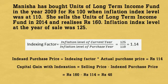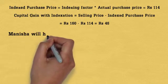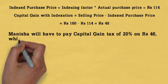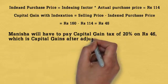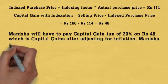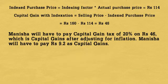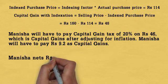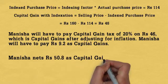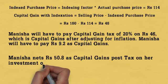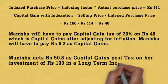Capital gain with indexation is equal to selling price minus indexed purchase price, which is Rs. 160 minus Rs. 114, which is Rs. 46. Manisha will have to pay capital gain tax of 20% on Rs. 46, which is the capital gain after adjusting for inflation. Manisha will have to pay Rs. 9.2 as capital gains tax.